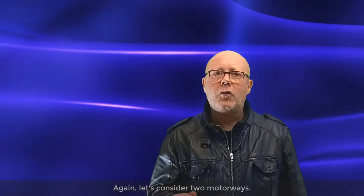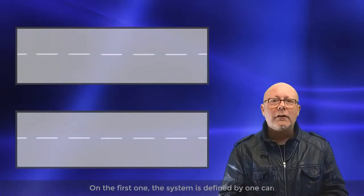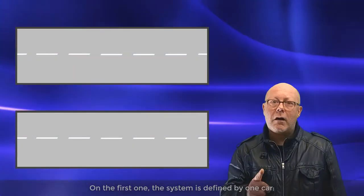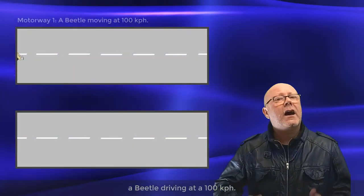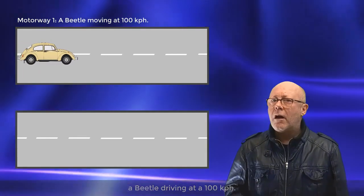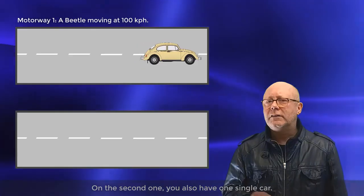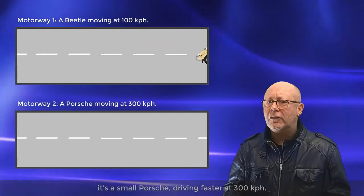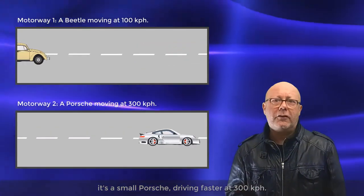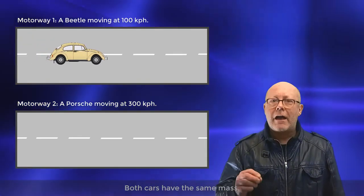Again, let's consider two motorways. On the first one, the system is defined by one car, a Beetle driving at 100 kph. On the second one, you also have one single car, it's a small Porsche driving faster, at 300 kph. Both cars have the same mass.